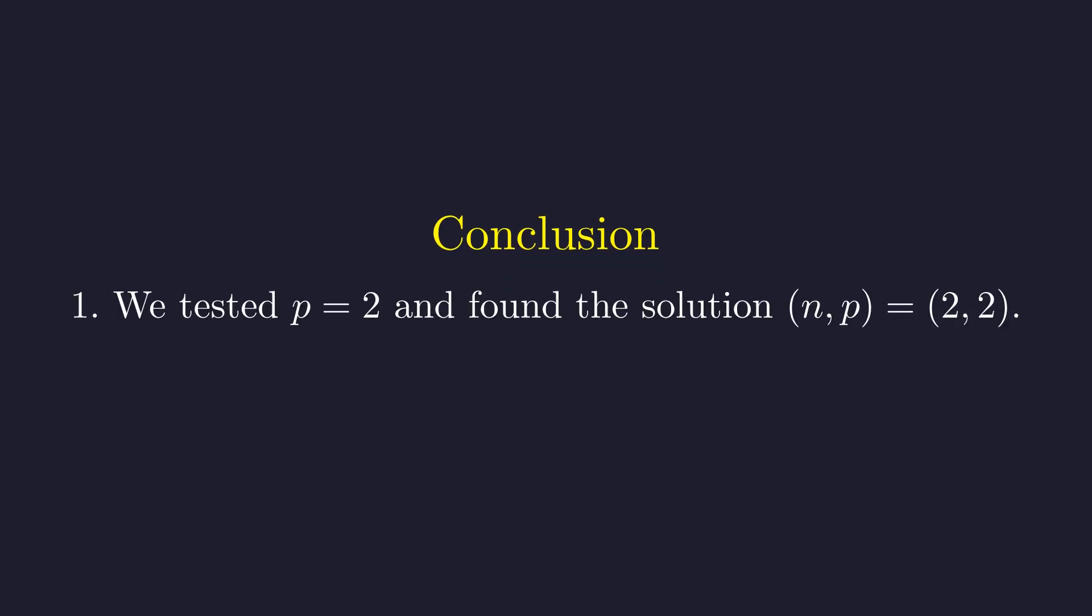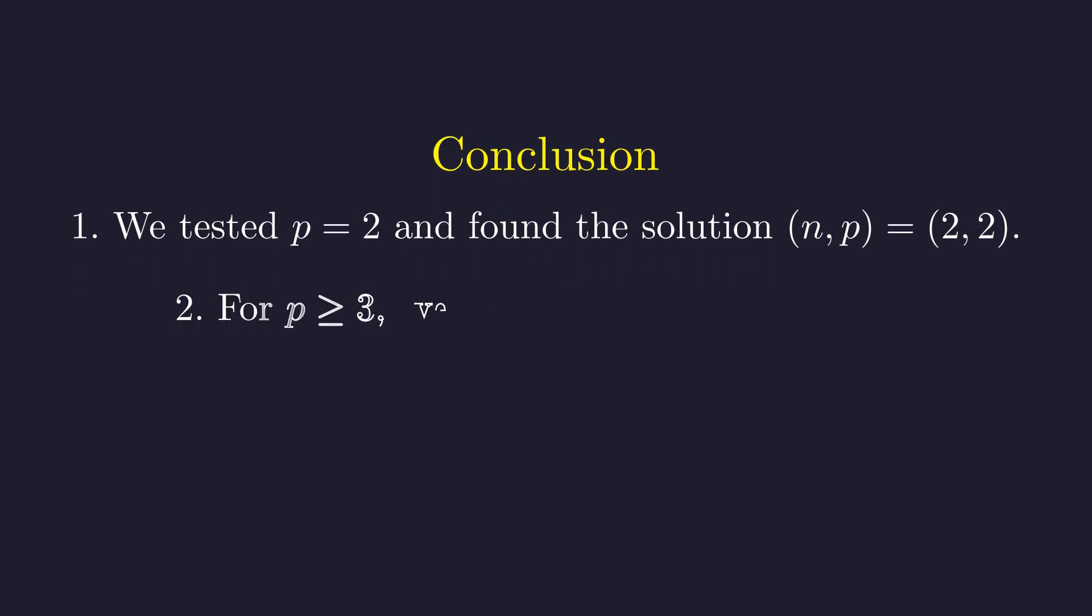Let's put all our pieces together. First, our initial test of p equals 2 yielded the unique solution pair, (2, 2). Second, we used an inequality argument to prove that for any prime p of 3 or greater, no solution can possibly exist.